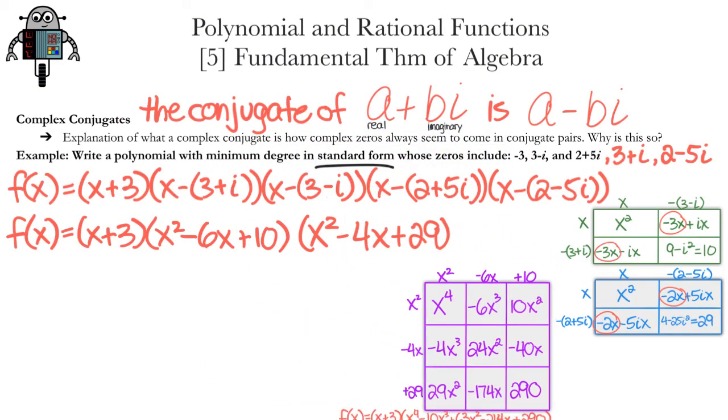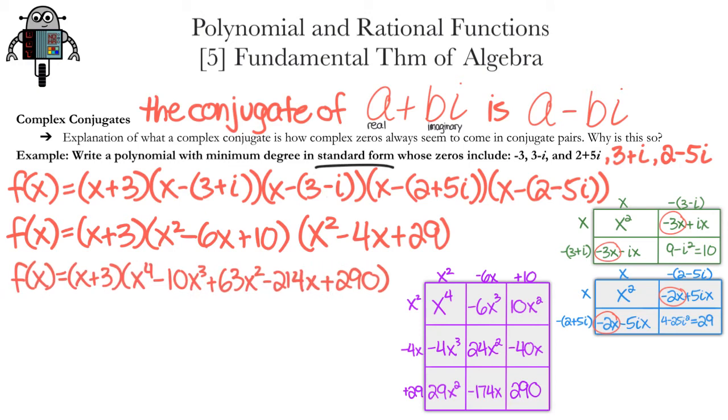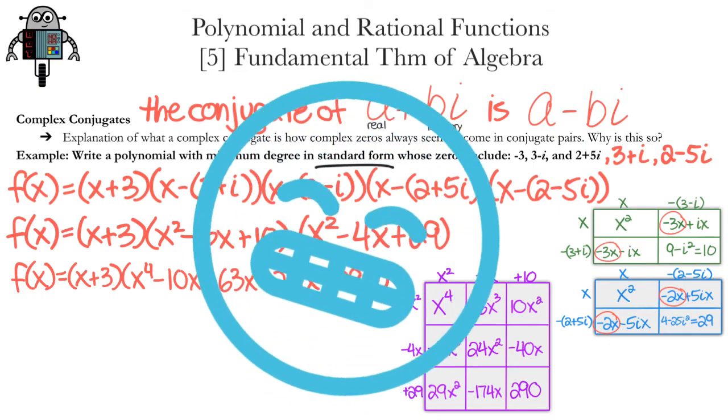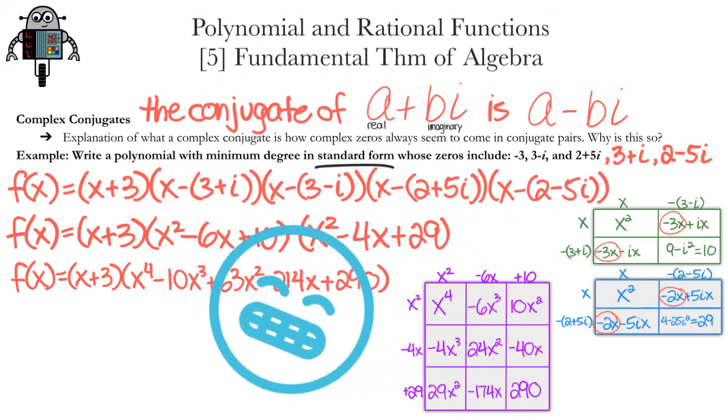Therefore, f can be written as (x + 3)(x⁴ - 10x³ + 63x² - 214x + 290). Let's take a breather. And last step.